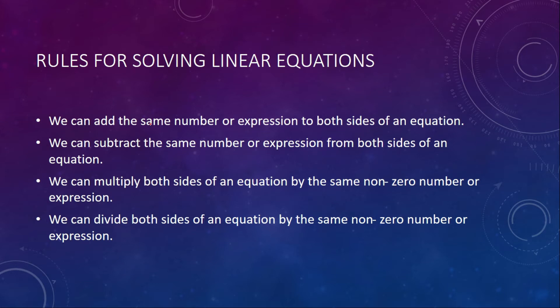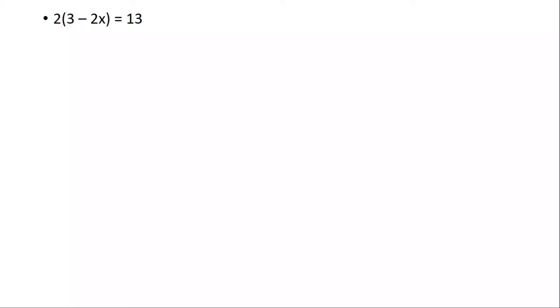There are some rules for solving linear equations. First, we can add the same number or expression to both sides of an equation. Second, we can subtract the same number or expression from both sides. Third, we can multiply both sides by the same non-zero number or expression. And lastly, we can divide both sides by the same non-zero number or expression.